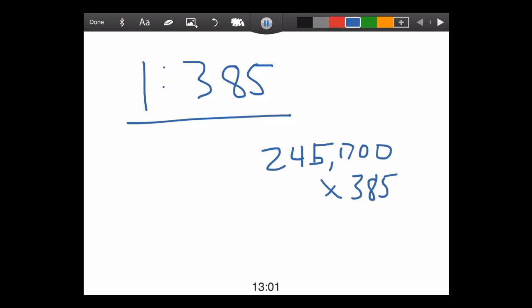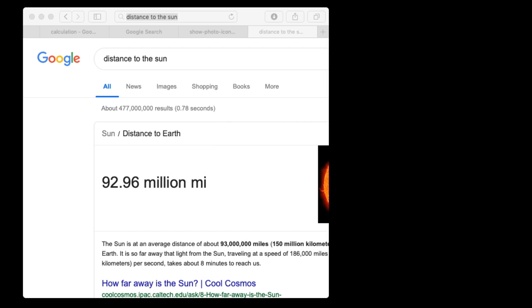So if we take our 245,000 miles to the Moon times 385, that gives us a distance to the Sun. And what is that distance? It's 94,409,322 miles. Now, let's go ahead and see how we did with that. That's 92.96 million. So we're off roughly 1.5 million out of nearly 100 million. So we're below 2% error there. That's not too bad.